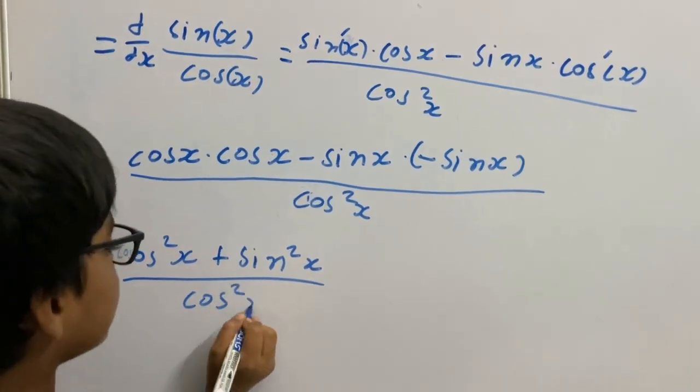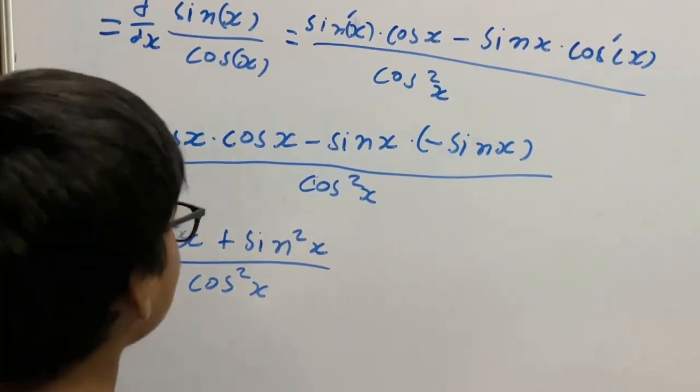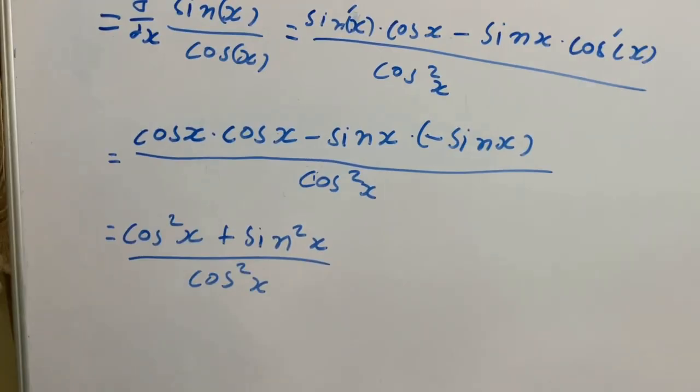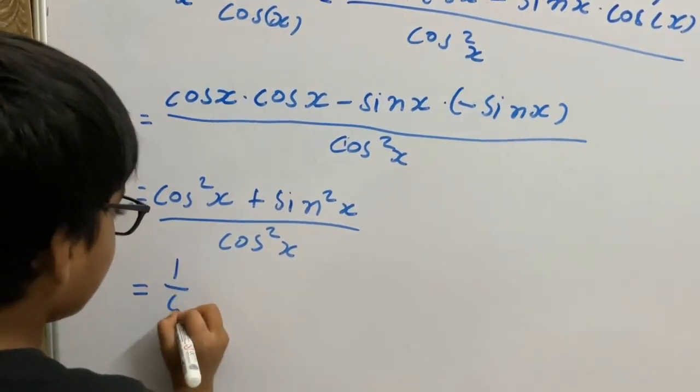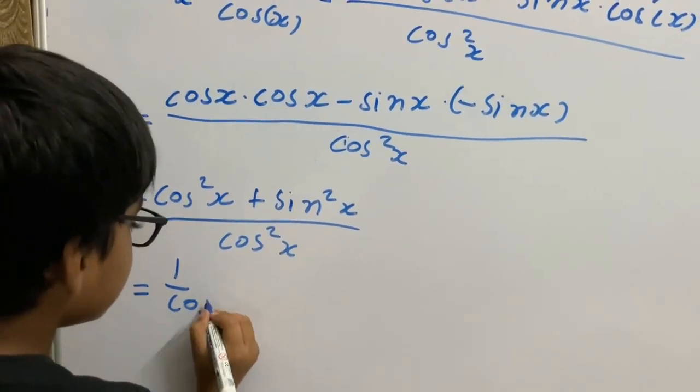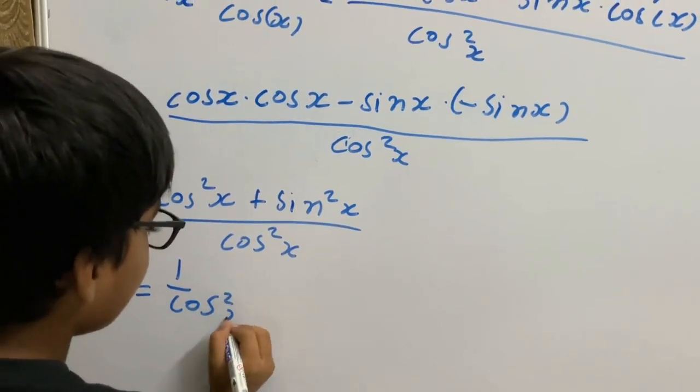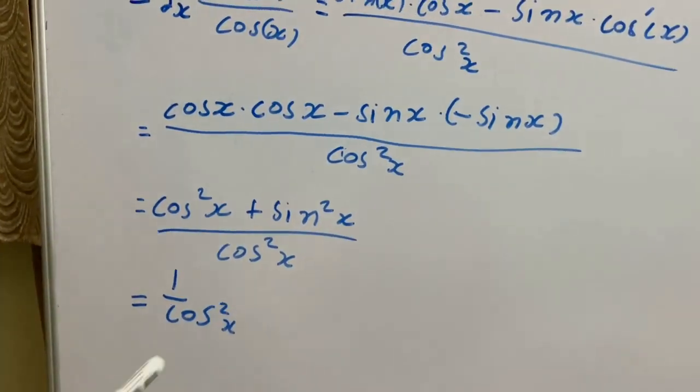We know that cos squared x plus sin squared x equals 1. So this equals 1 divided by cos squared x. This is the derivative of tan x.